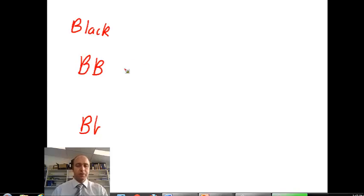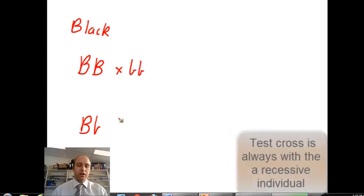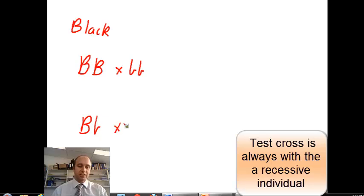Now what we use in our experiments here is we cross in a test cross always with a recessive individual. So in this case, the white sheep. And we get some very different results.